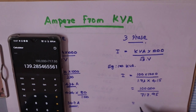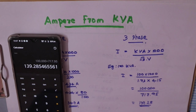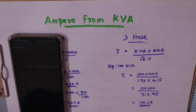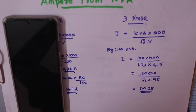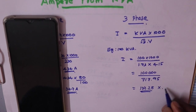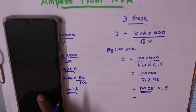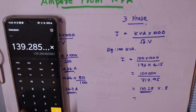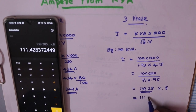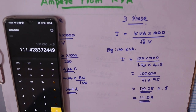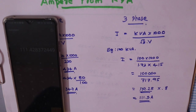The result is approximately 2.8A. This is the full load current for the three-phase generator. Applying the 0.8 power factor: the value for the three-phase 100 kVA compared to the single-phase is different and must be applied accordingly.